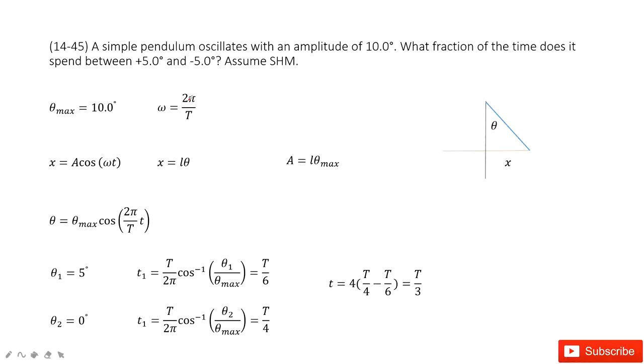Now we have a simple pendulum oscillations. Its amplitude is given, and we also know its angular velocity is 2π over T. We need to find what fraction of time does it spend between these two ranges.